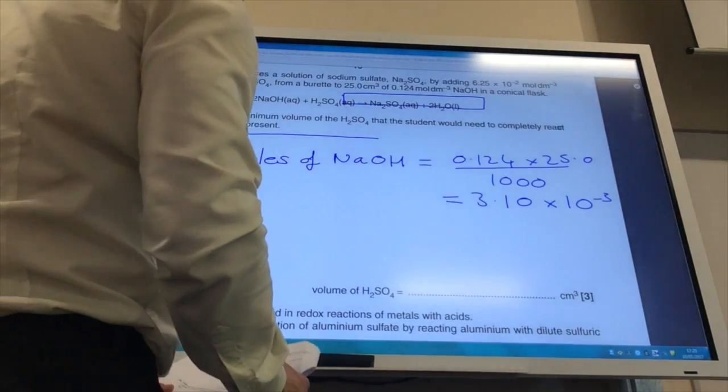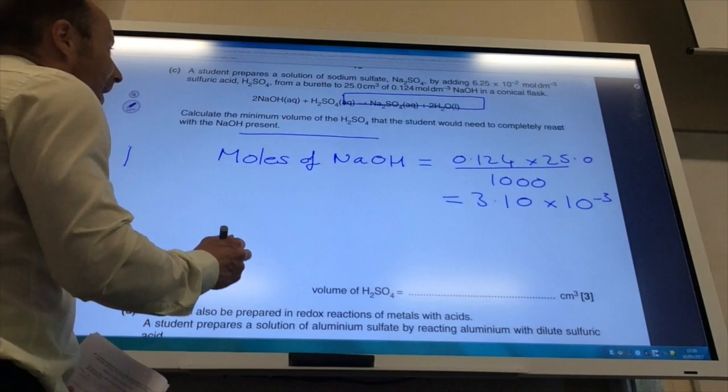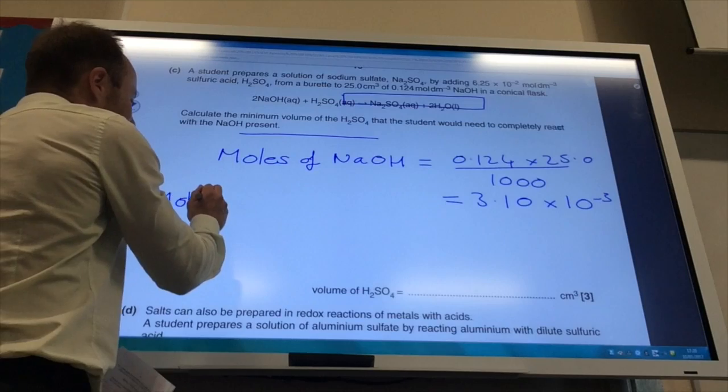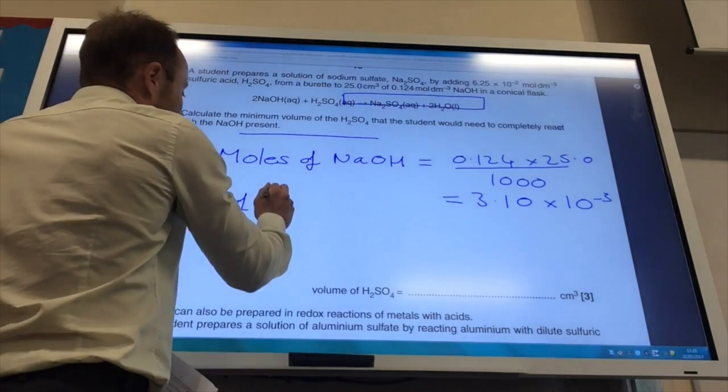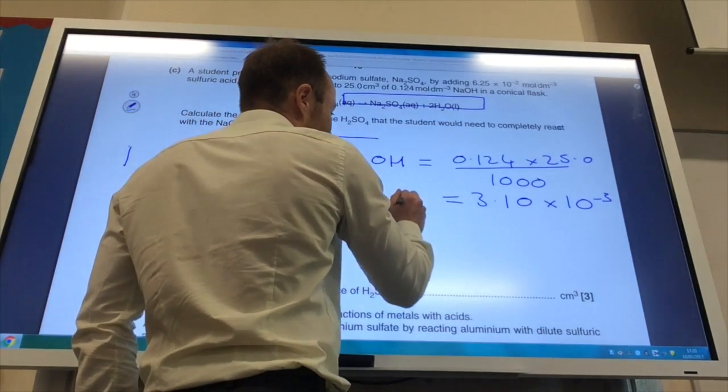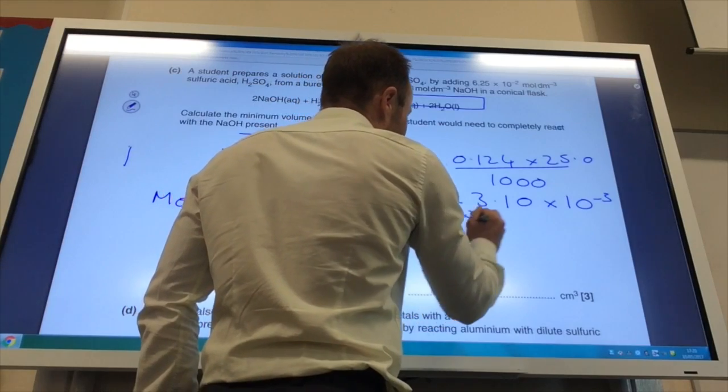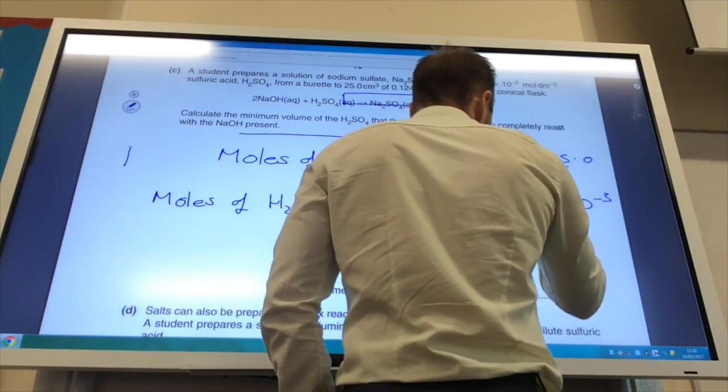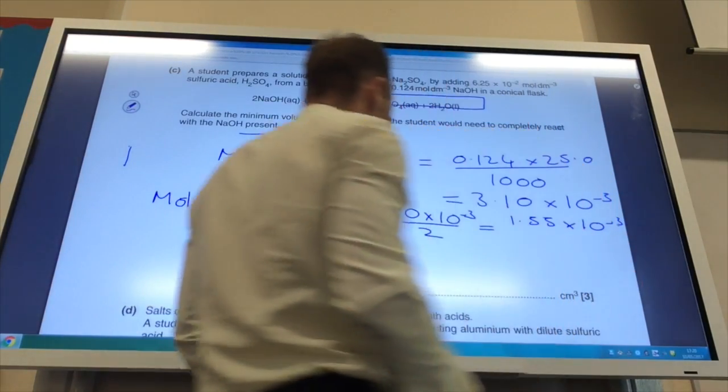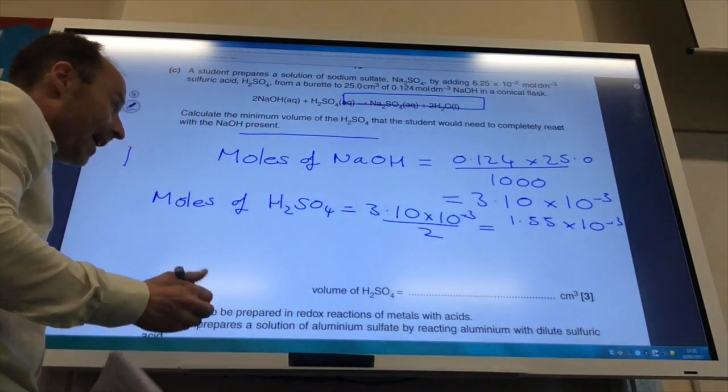Right, so once I've got that, I have moles of sodium hydroxide. So, I need to work out how many moles of sulfuric acid is going to react with that. So, if you look at the equation, it's a 2 to 1 reaction. So, the moles of sulfuric acid is going to be 3.10 times 10 to the minus 3 divided by 2, which is 1.55 times 10 to the minus 3, because for every two of those, you only need one sulfuric acid.